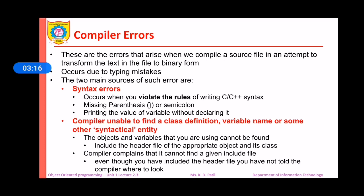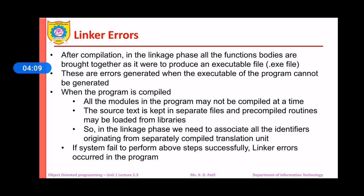We may also get syntax errors if we try to print the value of a variable without declaring it. The other type of compiler errors occur when the compiler cannot find the class definition, variable name, or syntactical entities like header files. For example, if we are using string in our C++ program and have not included the header file string, or if we have not used the proper syntax — hash include with angular brackets and string — then these compiler errors may occur.